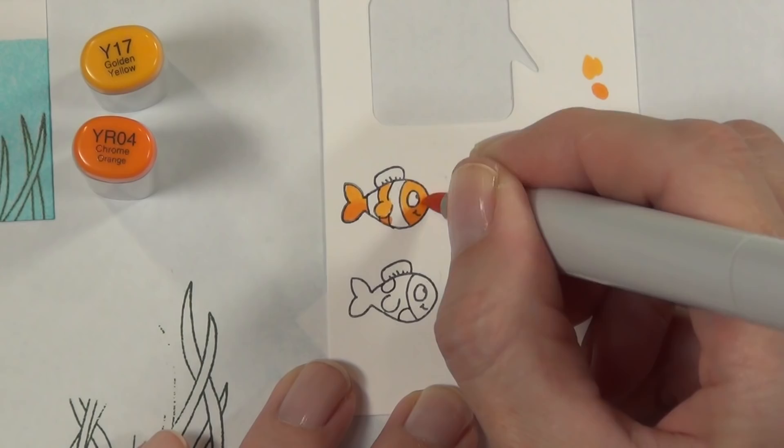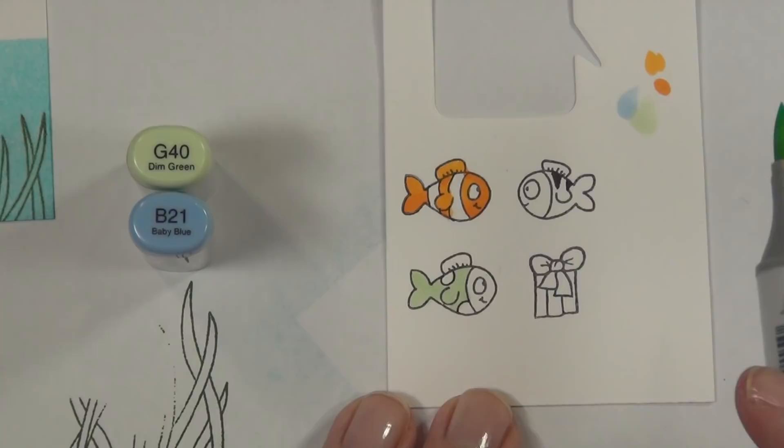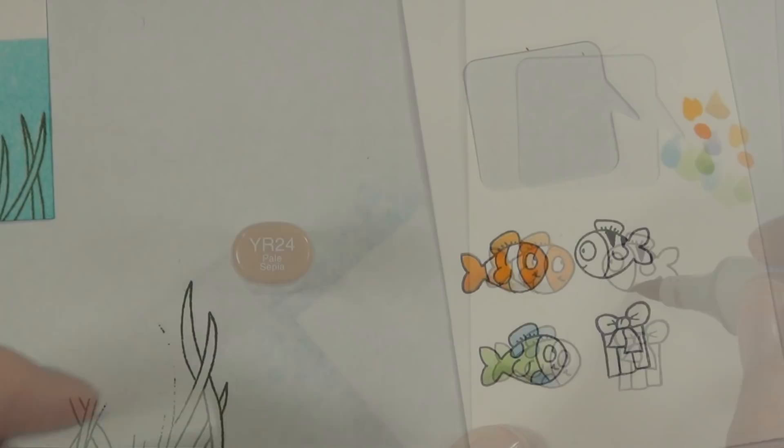We have lots of them around here where I live on the coral reefs and they are just beautiful. They really are this bright orange—it's amazing—like Copic Y17.